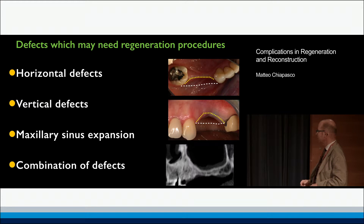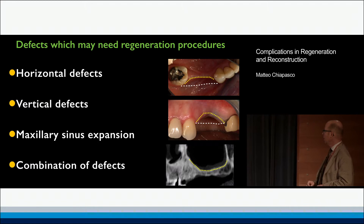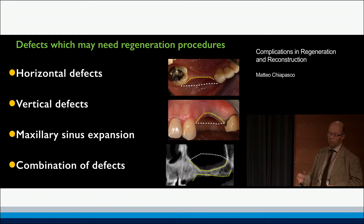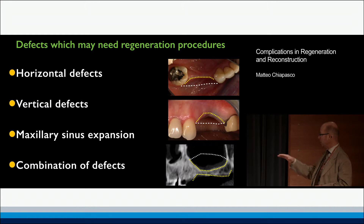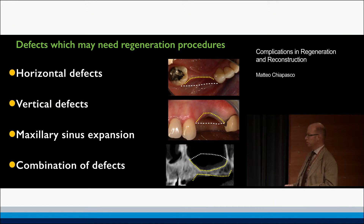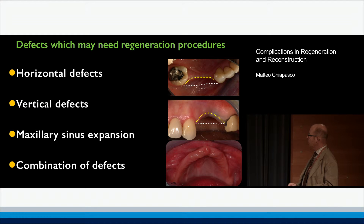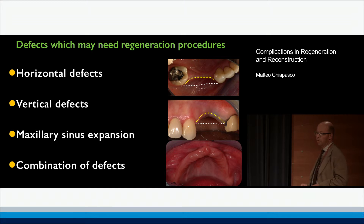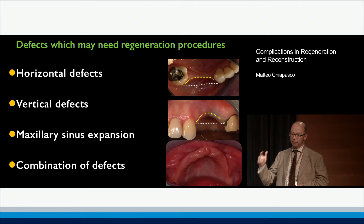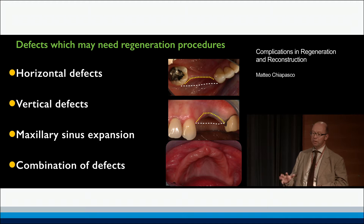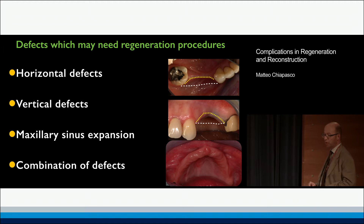We can have maxillary sinus expansion, which can reduce the bone, and it can be combined with vertical and/or horizontal resorption — meaning combination defects — which is of course an even worse situation. Finally, we can have extreme cases with extreme atrophy where even narrow, short, and zygoma implants can be difficult to use to achieve a nice solution.